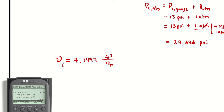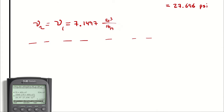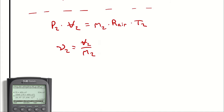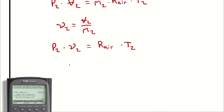That specific volume at state 1 is also equal to specific volume at state 2, which means I now have two independent intensive properties at state 2. That means I can calculate whatever I want at state 2 — for example, P2 using the ideal gas law again. Writing specific volume as v2 = V2/m2, I substitute into PV = mRT to get P2 × v2 = R_air × T2, so P2 = R_air × T2 / v2.